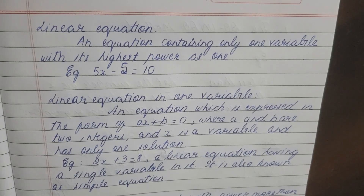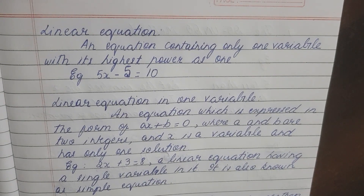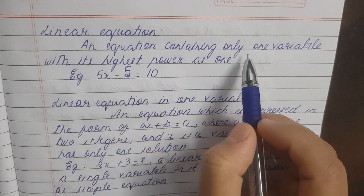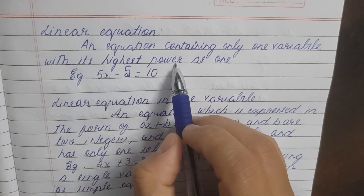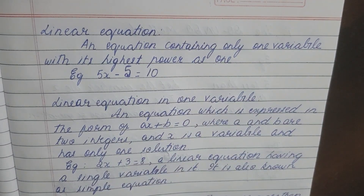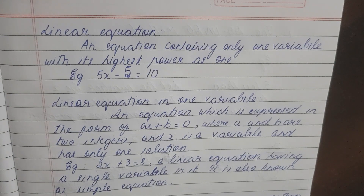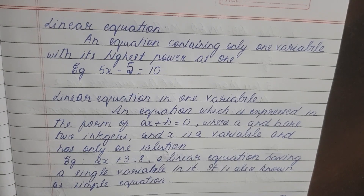Now we saw what an equation is. Now let's see what a linear equation is. An equation containing only one variable with its highest power as 1 is a linear equation. The equation has only one variable — it can be any alphabet, but only one variable. If the variable is x, it must stay as x; if it is a, it stays as a. And the highest power must be 1, meaning x to the power 1, which is just x. That is what is called a linear equation.